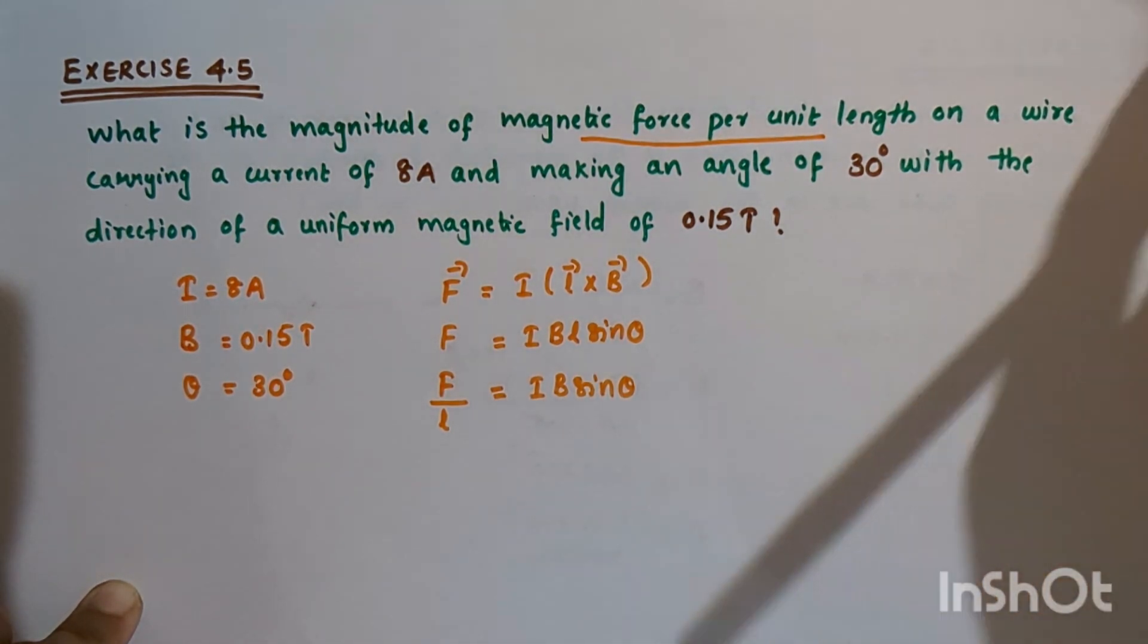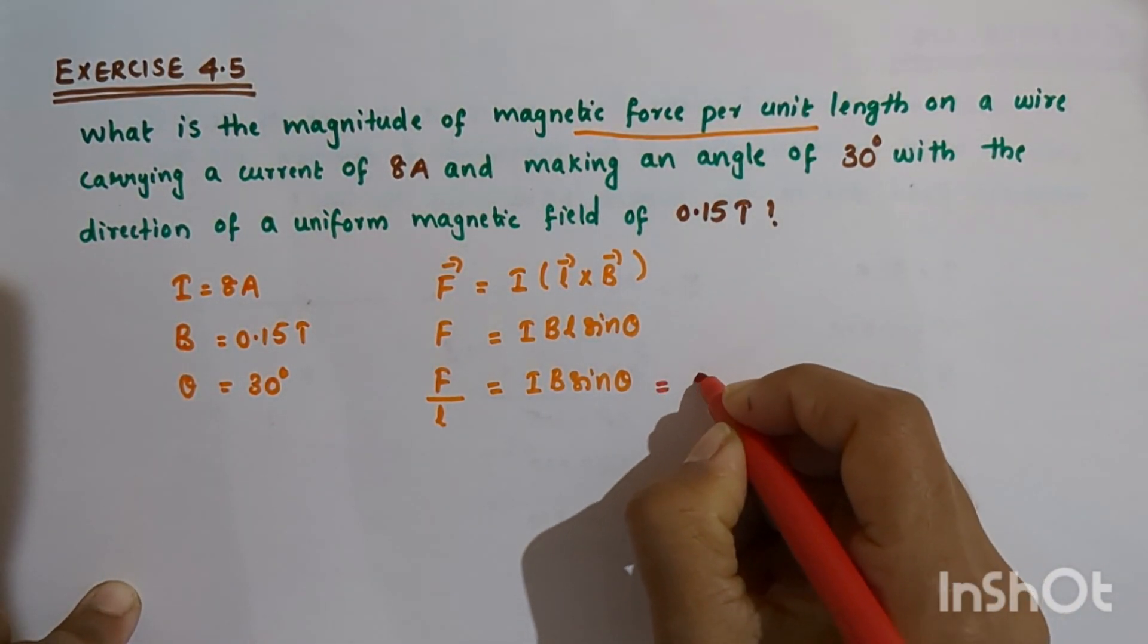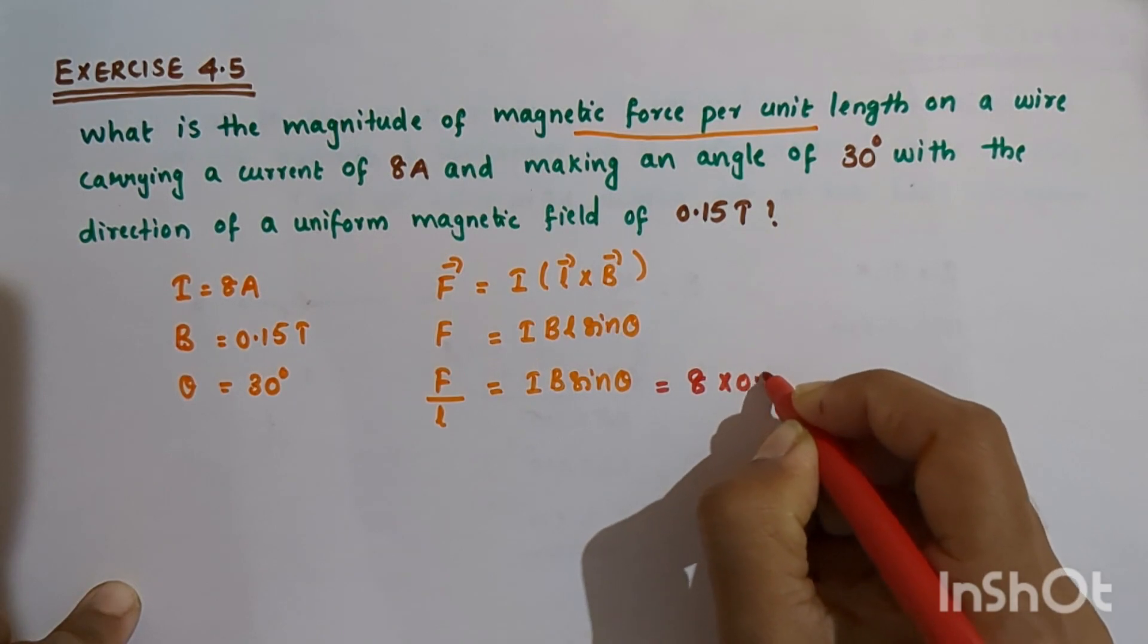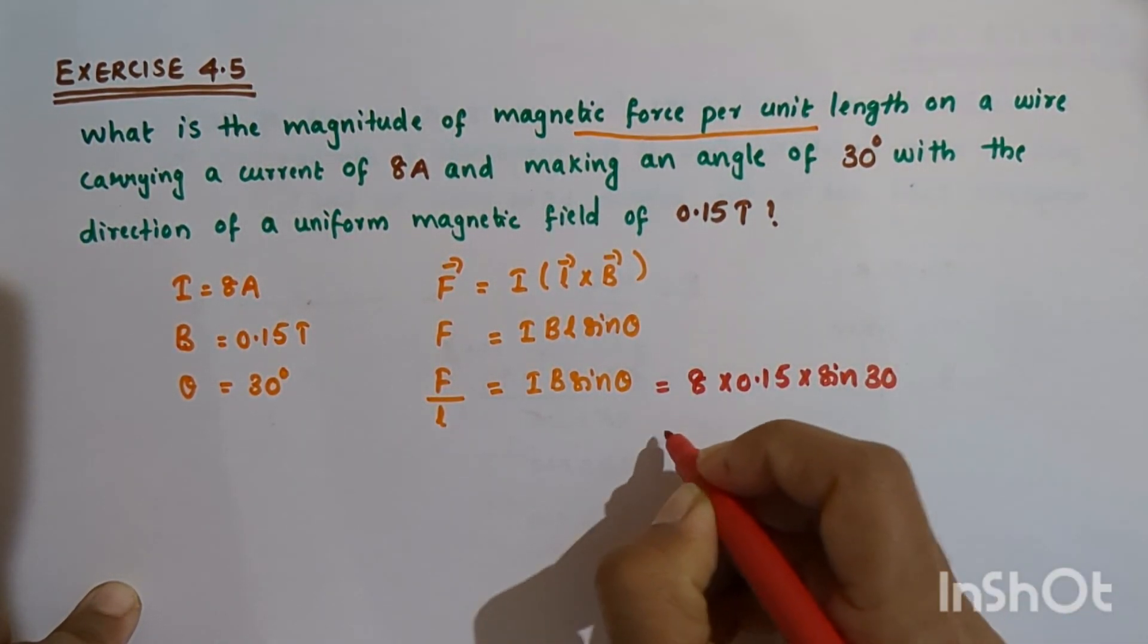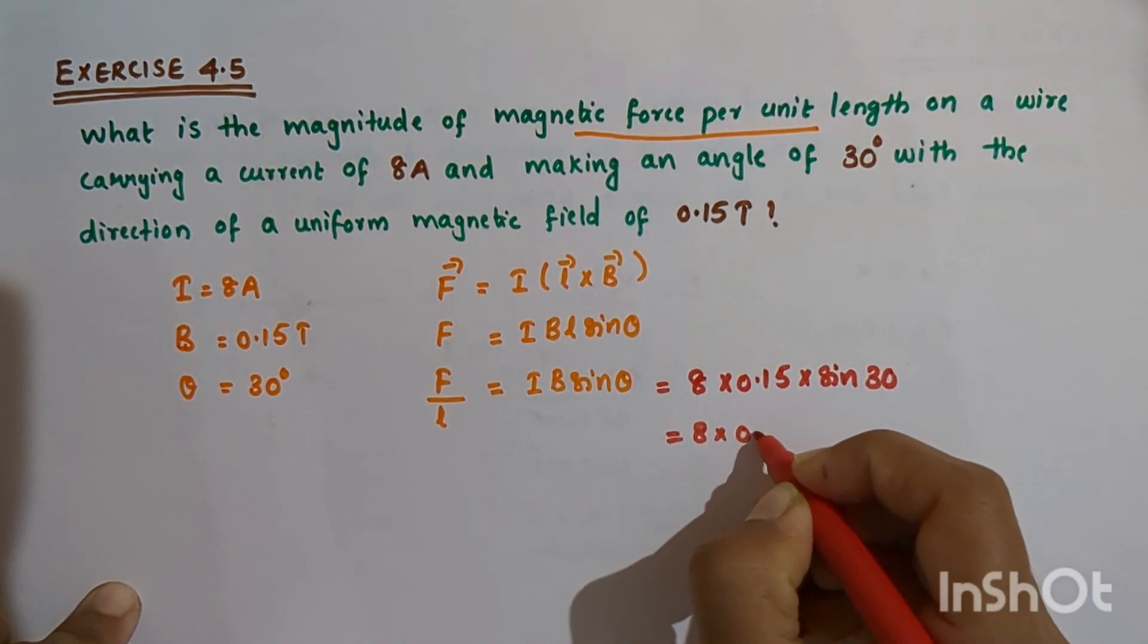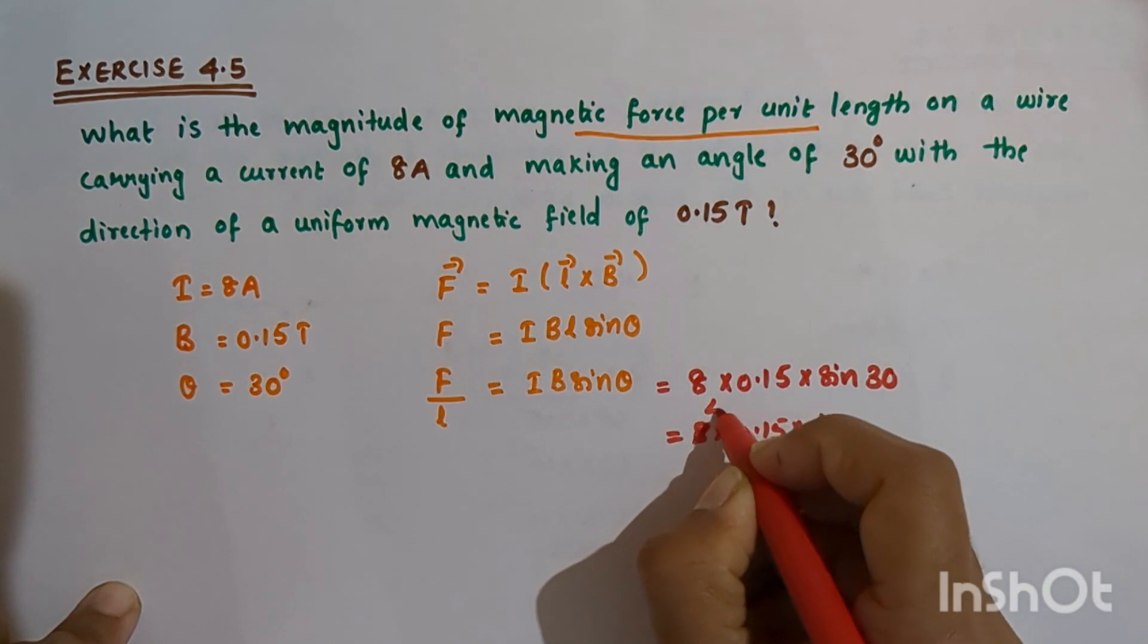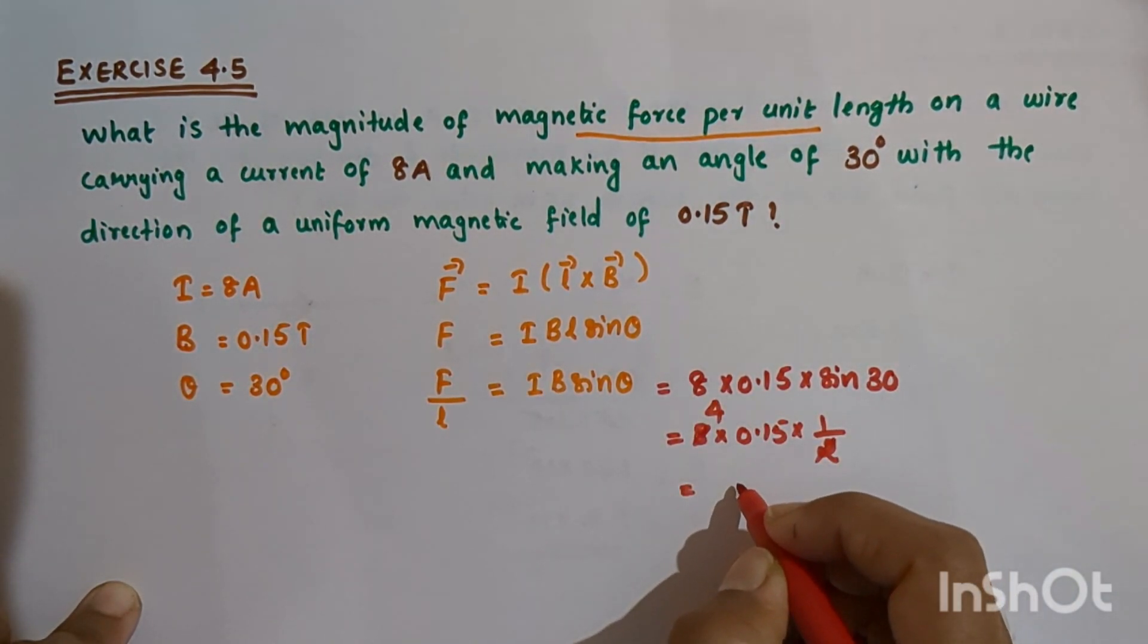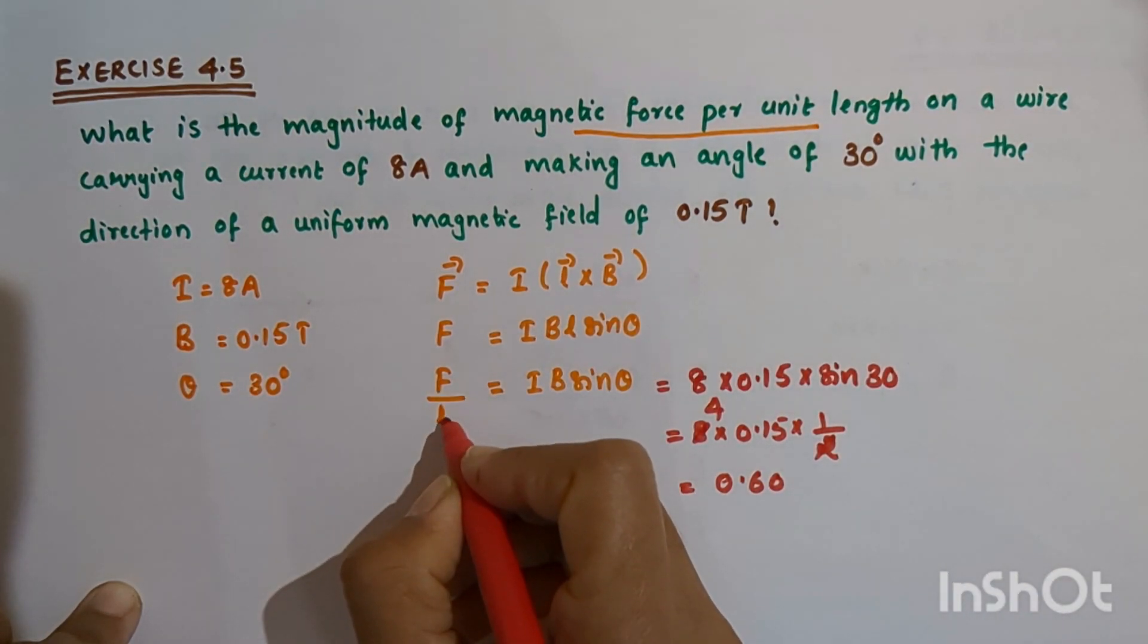Now we substitute the values. I is 8 ampere, B is 0.15 tesla, sin 30 is 1 by 2. So 8 times 0.15 times 1 by 2 equals 4 times 0.15, which equals 0.60.